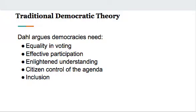In the book, one of the things they talk about is Robert Dahl's traditional democratic theory. Dahl is kind of an idealist. He talks about the fact that democracies, in order to be fully functioning, need to have equality in voting — meaning everybody needs to be able to participate and vote. He's not talking about five-year-olds voting, but all adults need to have the same access to legally participate in voting.